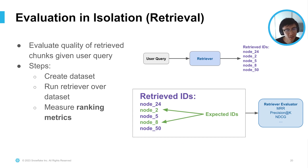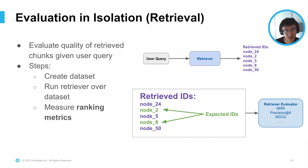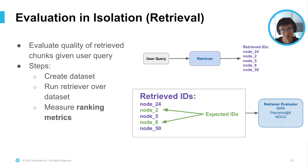For evaluation in isolation on the retrieval piece, you evaluate the quality of the retrieved chunks given the user query. To do this, you create a human-annotated dataset or labeled dataset representing query and ground-truth context pairs. You run your proposed retrieval strategy over this evaluation dataset and look at how the predicted rankings match up to the actual expected ground-truth IDs. Given the predicted rankings and the ground-truth IDs, you can measure ranking metrics like MRR, precision at K, and NDCG.